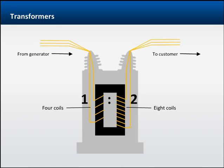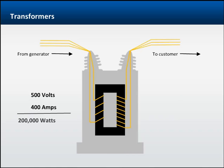So in this situation, the voltage would be increased by the same ratio, which is a factor of two from primary to secondary. Now, take a look at what the transformer has done to the voltage and amperage. You can see that the electricity coming into the transformer has 500 volts and 400 amps, which according to Watt's law (watts equals volts times amps), gives us 200,000 watts of power.